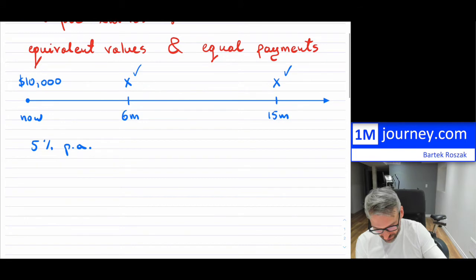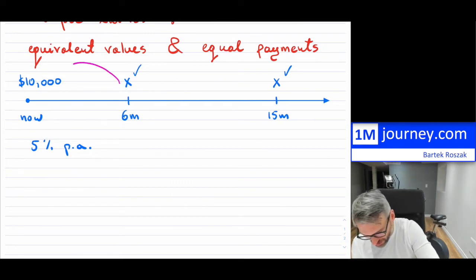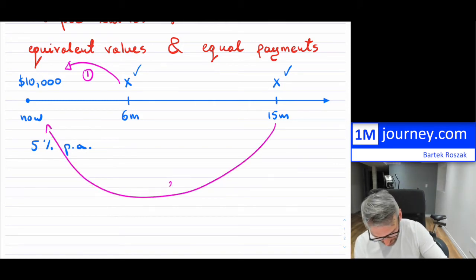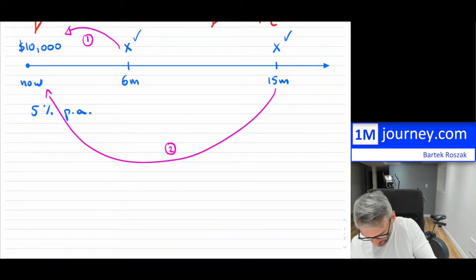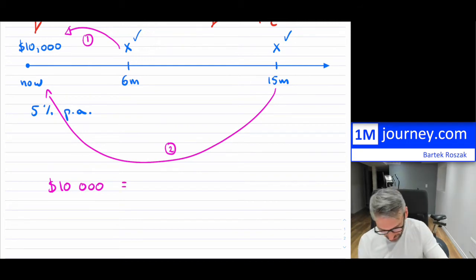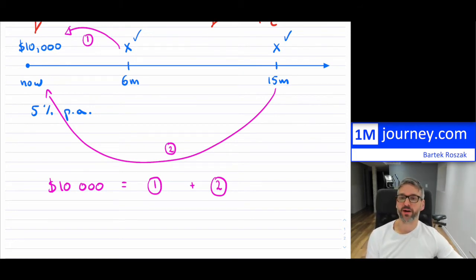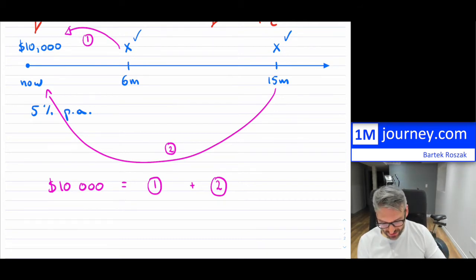This is how you would approach it: we want to bring these two values back to the focal date, which is right now. So we want to bring payment one back from six months, and payment two back from 15 months. We know that $10,000 equals payment one moved back by six months, plus payment two moved back by 15 months. You can use whatever timeframes you have — maybe a year, two years, or whatever.